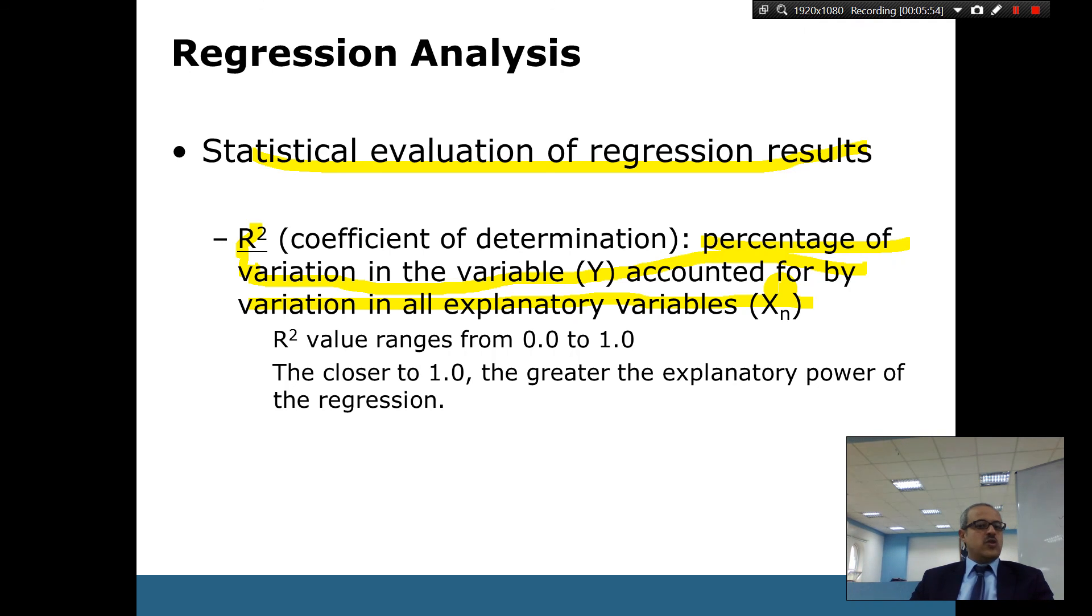Yeah, it's more or less about the explanatory power of the regression. Is it powerful to explain or not powerful to explain? And it's always a number between 0 and 1. The closer to 1, the better explanatory power. And the closer to 0, it means it doesn't really explain anything. So maybe you want to find some other alternatives to explain.